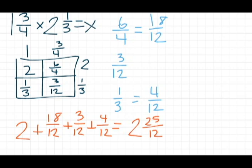I can simplify this and change it into a mixed number by dividing twelve into twenty-five, and I get four and one-twelfth.